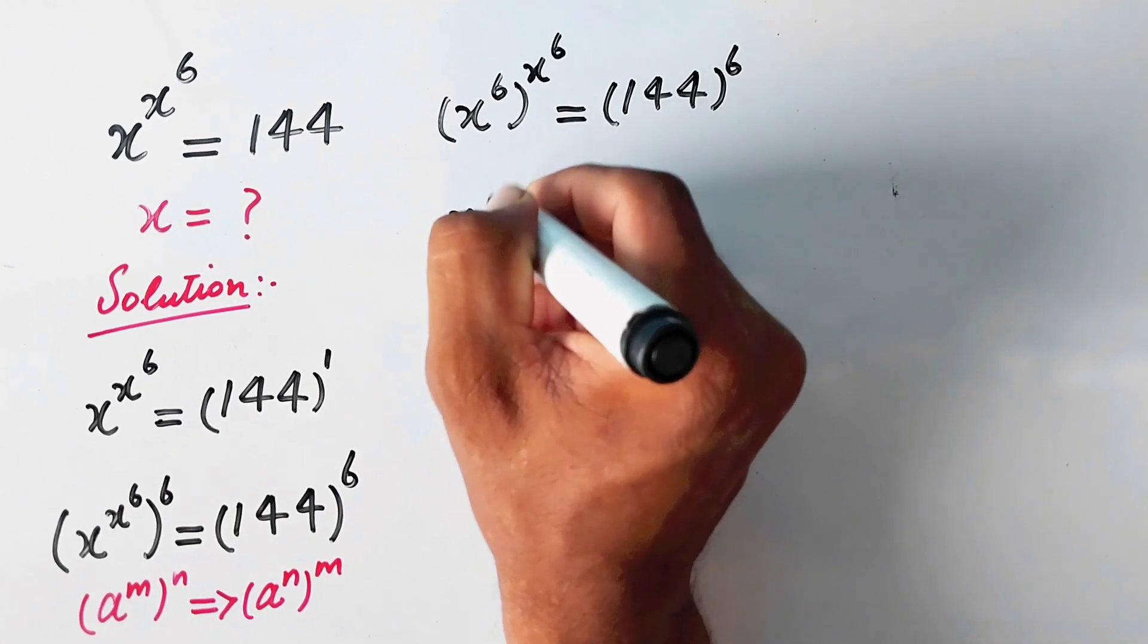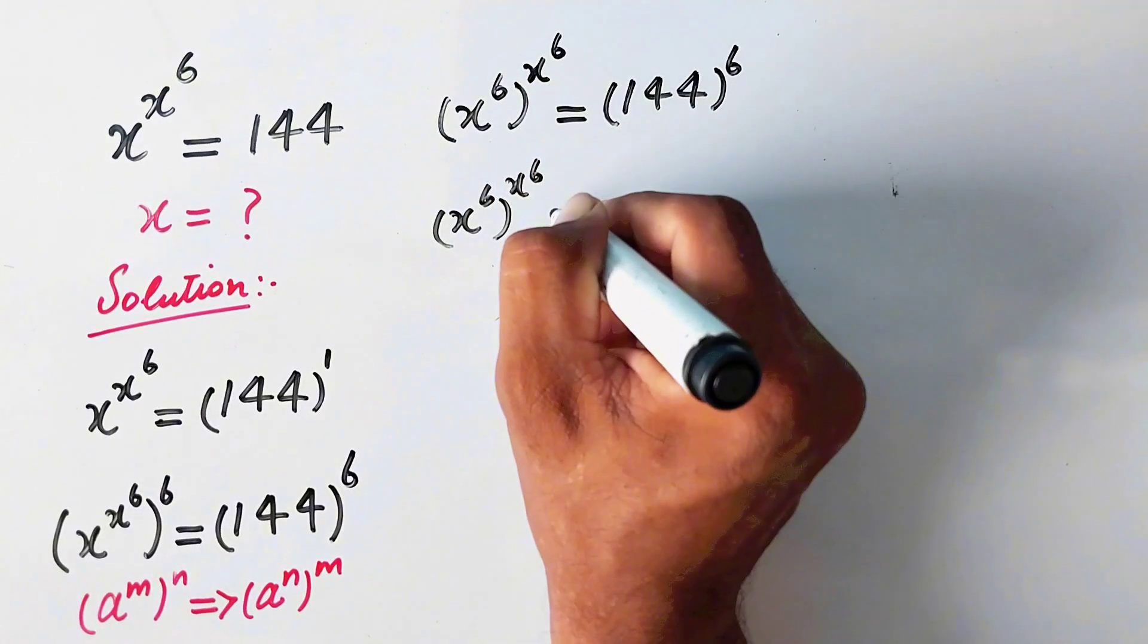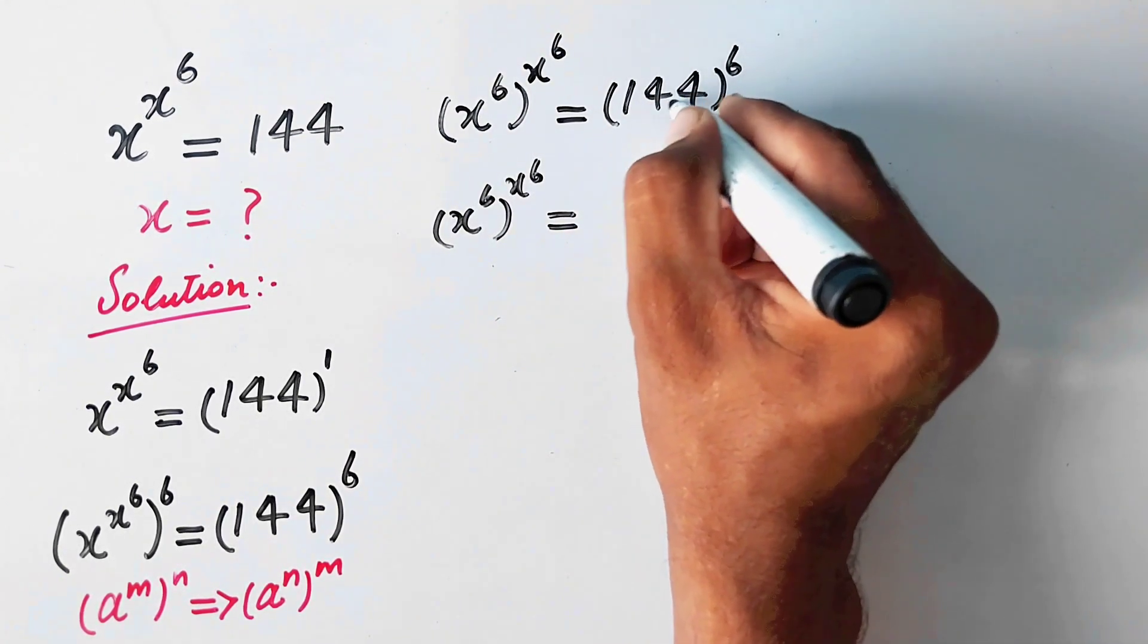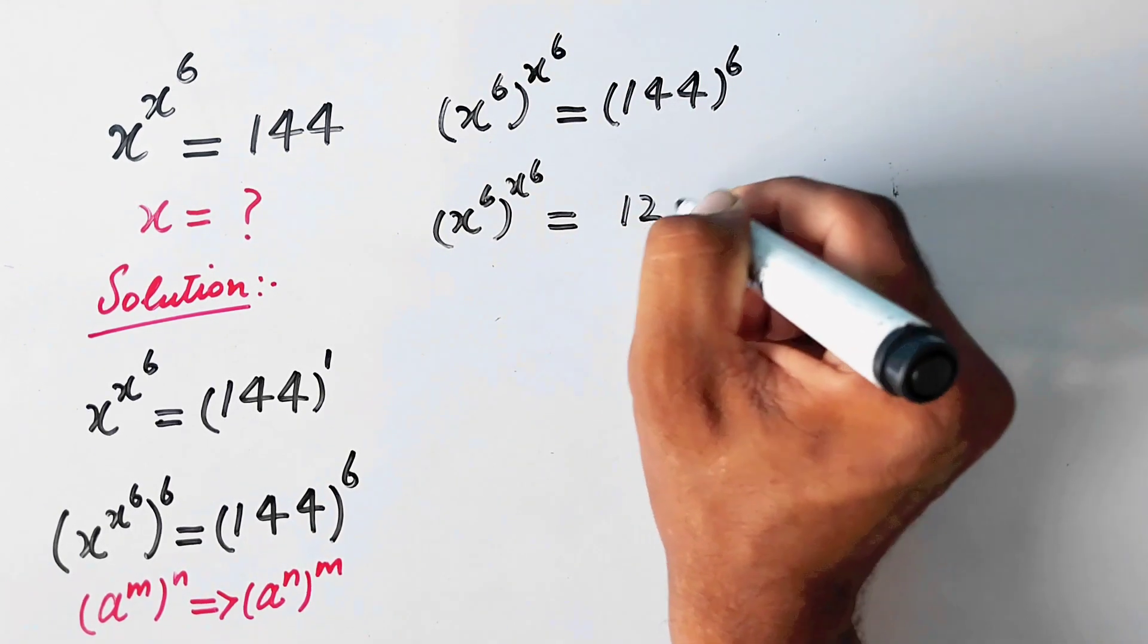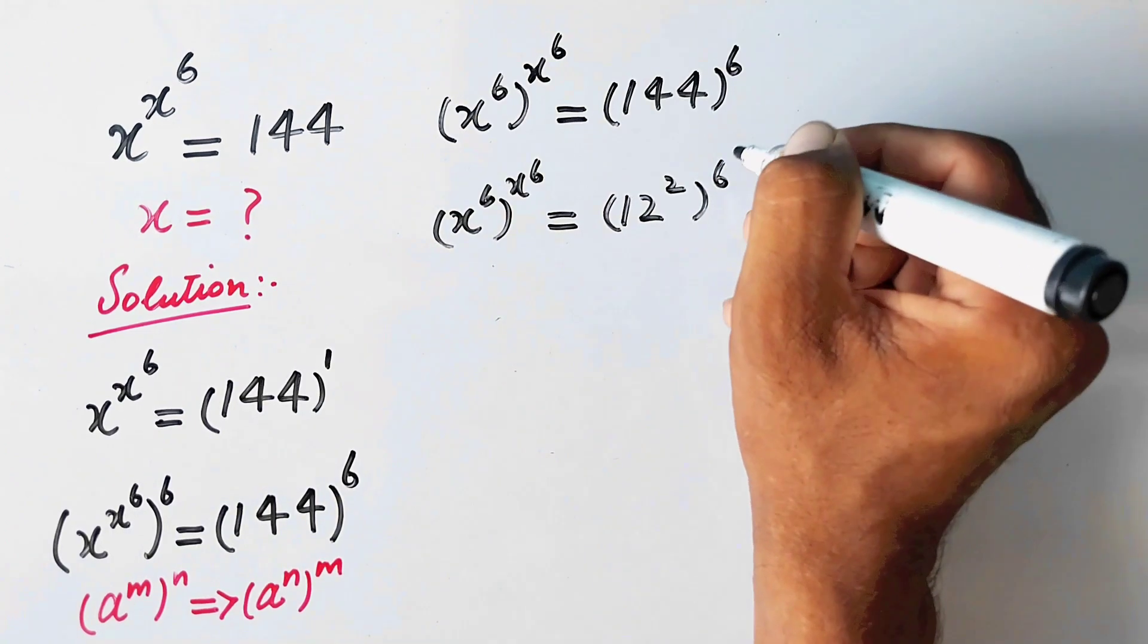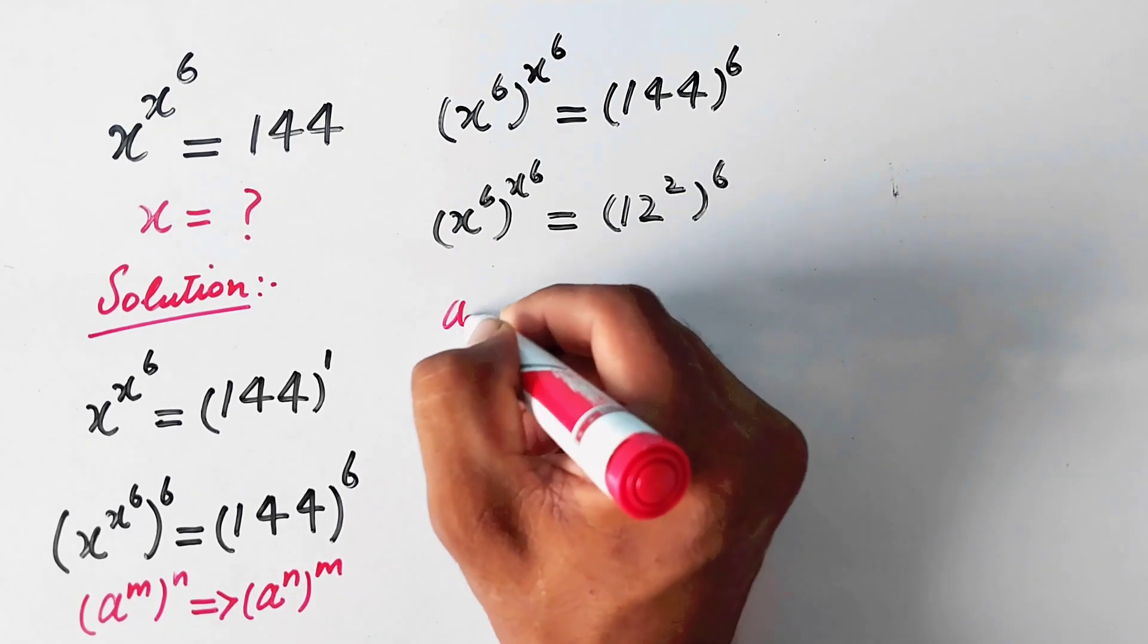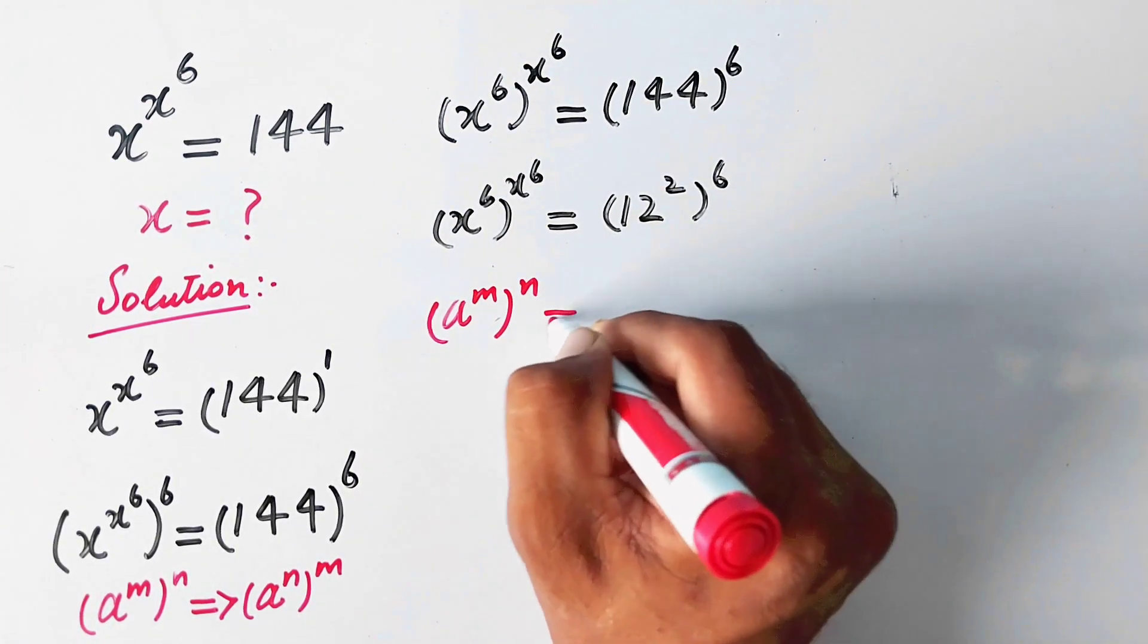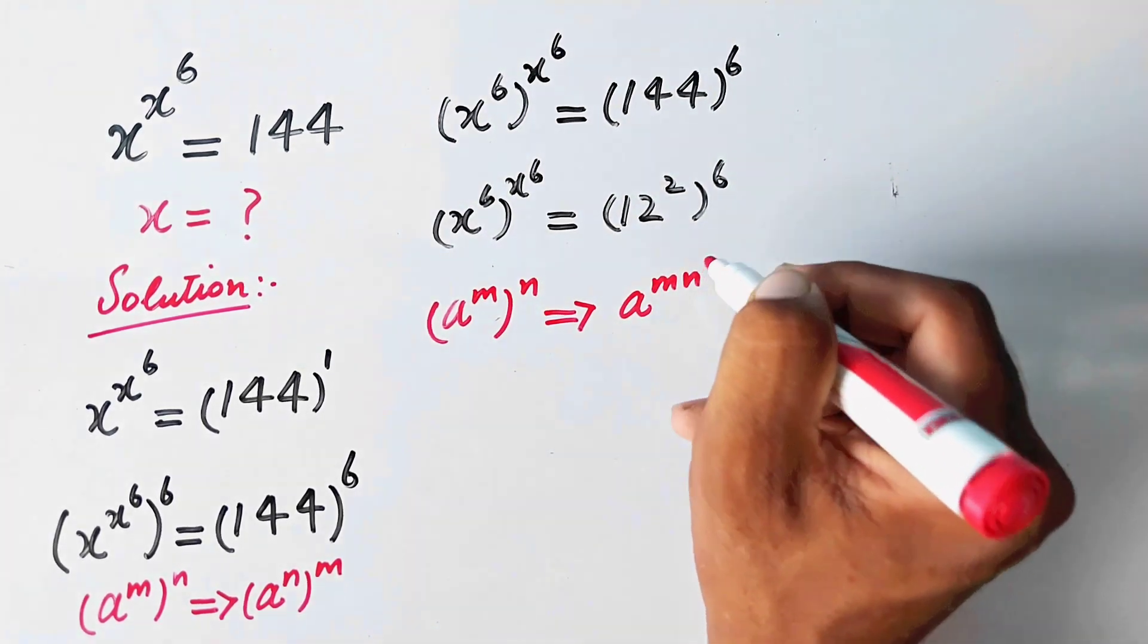And we can write (x^6)^(x^6) equals, and we can write 144 as 12 squared raised to power 6. Now the exponential formula (a^m)^n = a^(mn) is used.